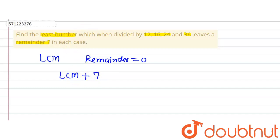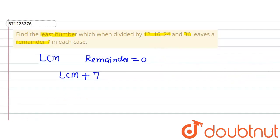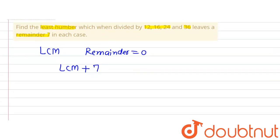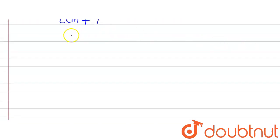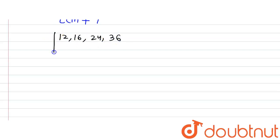First, let us find the LCM of the numbers given in this question. So we have 12, 16, 24, and 36. We write them down: 12, 16, 24, and 36, and begin finding their LCM.